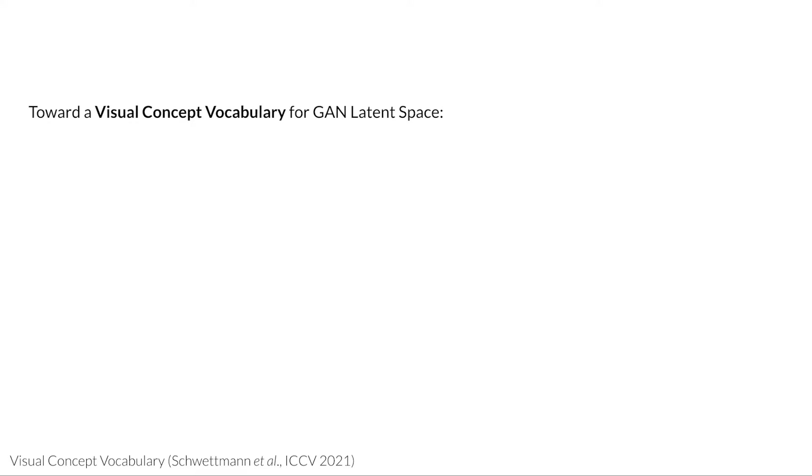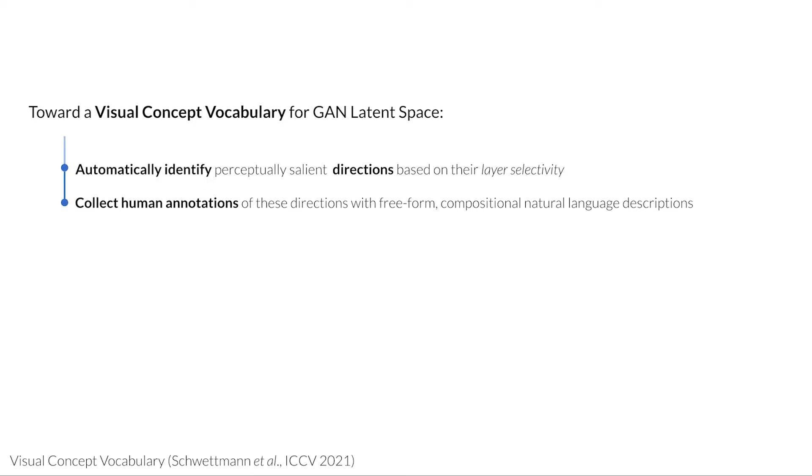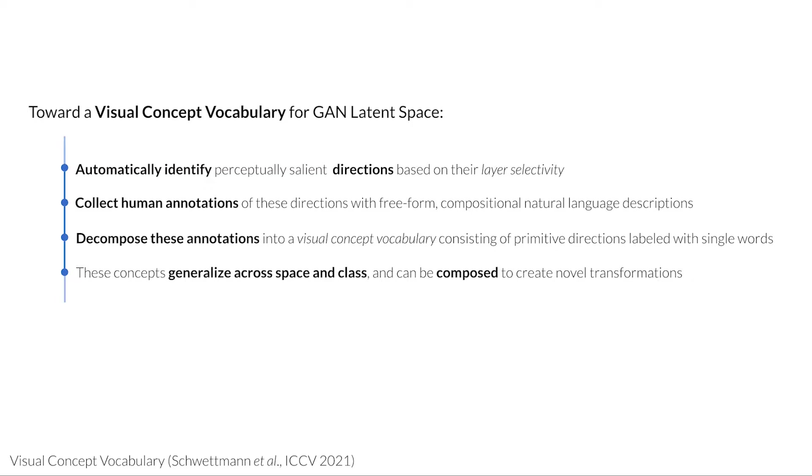Our method is built from three components. First, we identify a set of directions in the model that make minimal, meaningful image transformations at different levels of abstraction. Next, we collect human annotations of these directions, and then decompose the annotations into a visual concept vocabulary consisting of primitive directions labeled with single words. Finally, we show that these concepts generalize across latent space and image class, and can be composed to create novel transformations not present in the annotation data.